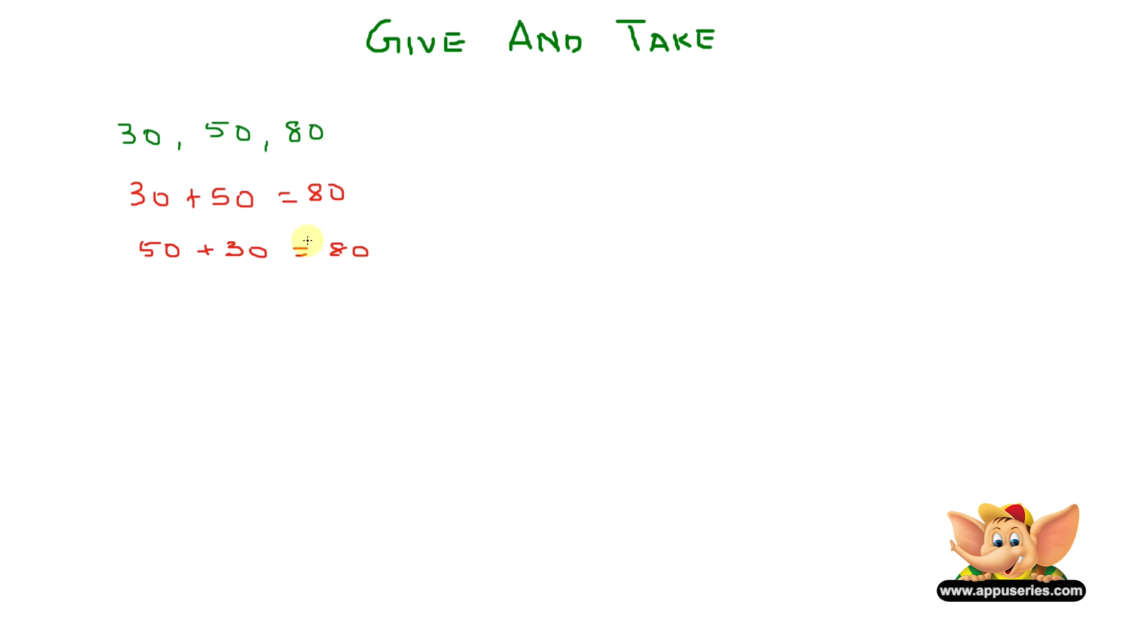Now let's try in subtraction. We can have 80 minus 50 equals 30, or 80 minus 30 equals 50. It's just a shift in the position of numbers and you can get a variety of combinations. Why don't you try taking some more of these numbers and try out different combinations in addition and subtraction?